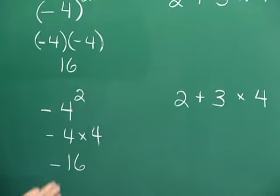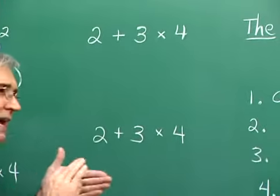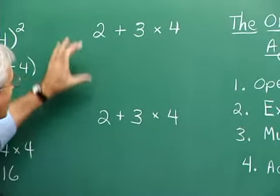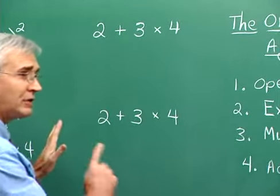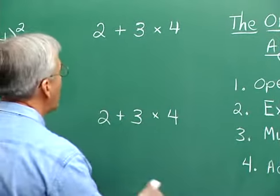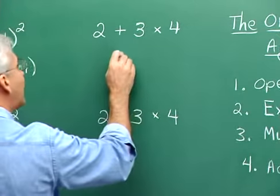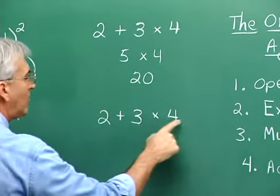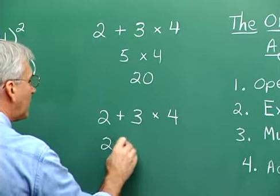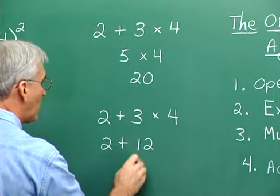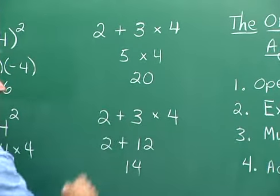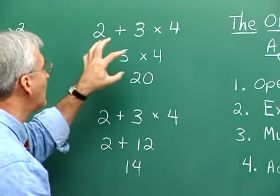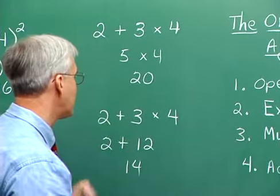Here's another situation. 2 plus 3 times 4 — there are really two ways to interpret this. One person might say, working left to right, 2 plus 3 is 5, then 5 times 4 is 20. Someone else would say, multiply 3 times 4 first to get 12, then 2 plus 12 is 14. Which one is right — the 14 or the 20? We need some agreement on how to deal with operations in circumstances like this.